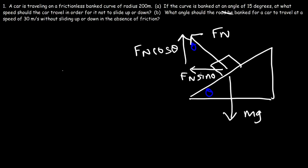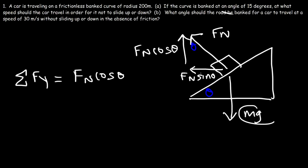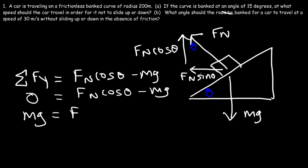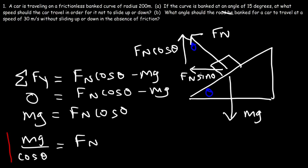Focusing on forces in the y-direction: the net force equals Fn cosine theta (upward, positive) minus mg (downward, negative). Since the car is not being lifted off the ground or going through it, the net force in the y-direction is zero. Therefore Fn cosine theta = mg, confirming that the normal force on a banked curve is mg divided by cosine theta, compared to mg times cosine theta on a regular incline.